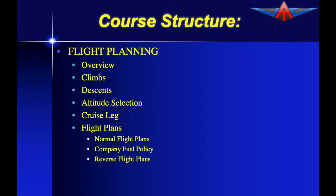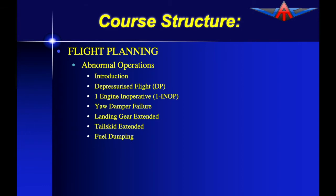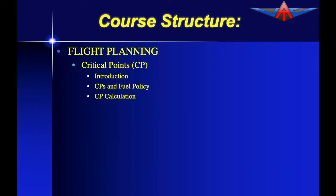There will be normal flight plans, we will look at company fuel policy, and we will look at reverse flight plans. Then there will be a series of abnormal operations to consider and how we actually plan those flights and allow for fuel. Then there will be a quick look at holding, followed by a couple of very important sections of the course. We will look at critical points, which will include the way the fuel policy is applied and how we calculate the location of the critical point.